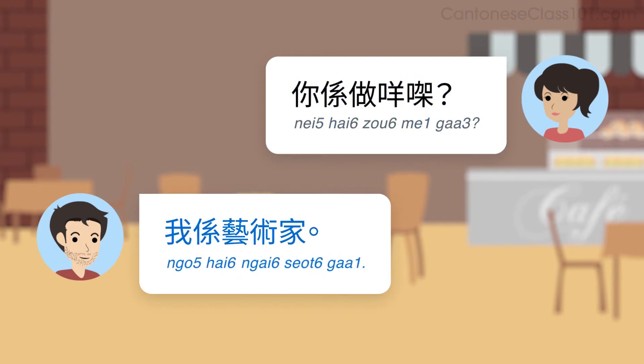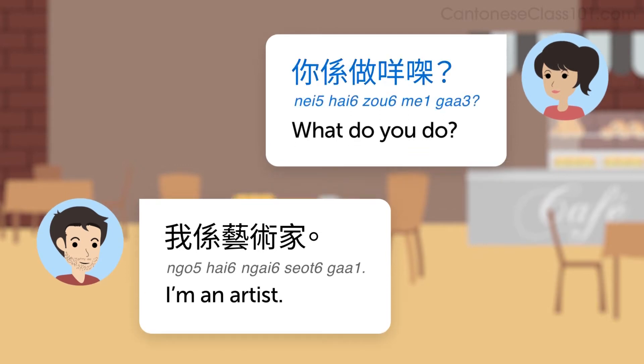你係做咩嘅? 我是藝術家. Listen to it again, now with the English translation. 你係做咩嘅? What do you do? 我係藝術家. I'm an artist. First of all, you need to learn how to say, What do you do? That's 你係做咩嘅? Listen to it again. 你係做咩嘅?